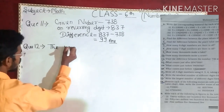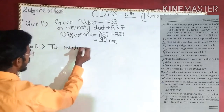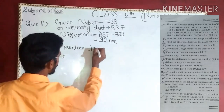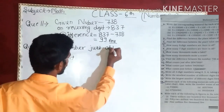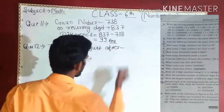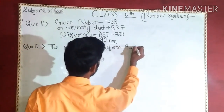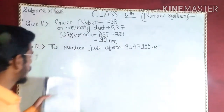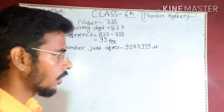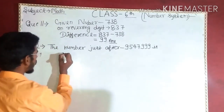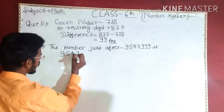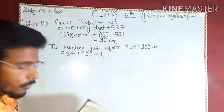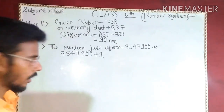The number just after 9547 with blanks — you have to write 9, 5, 4, 7, then blanks. In this question you have to add one in the last digit. What you have to do is simply add one.